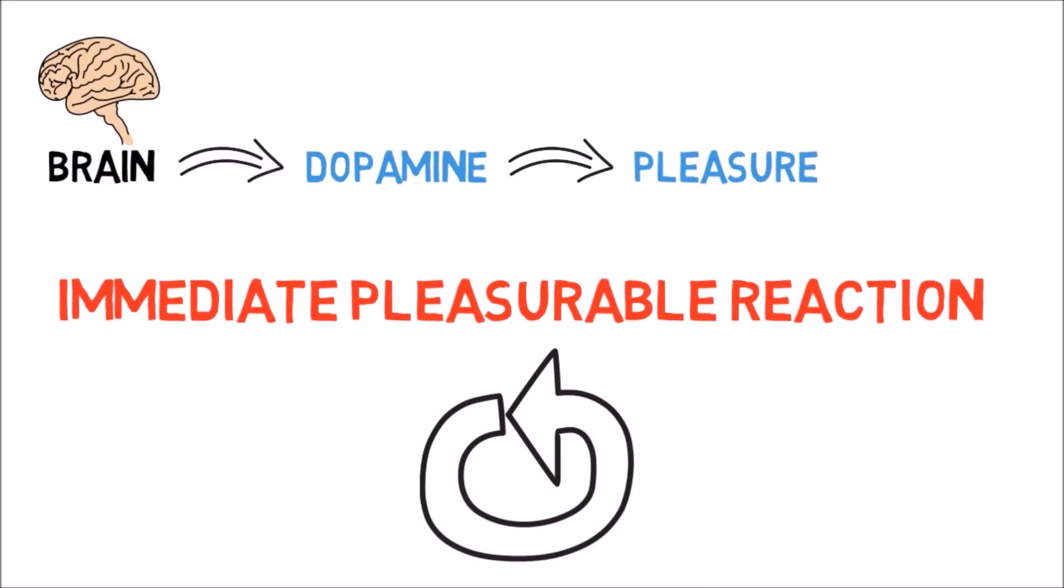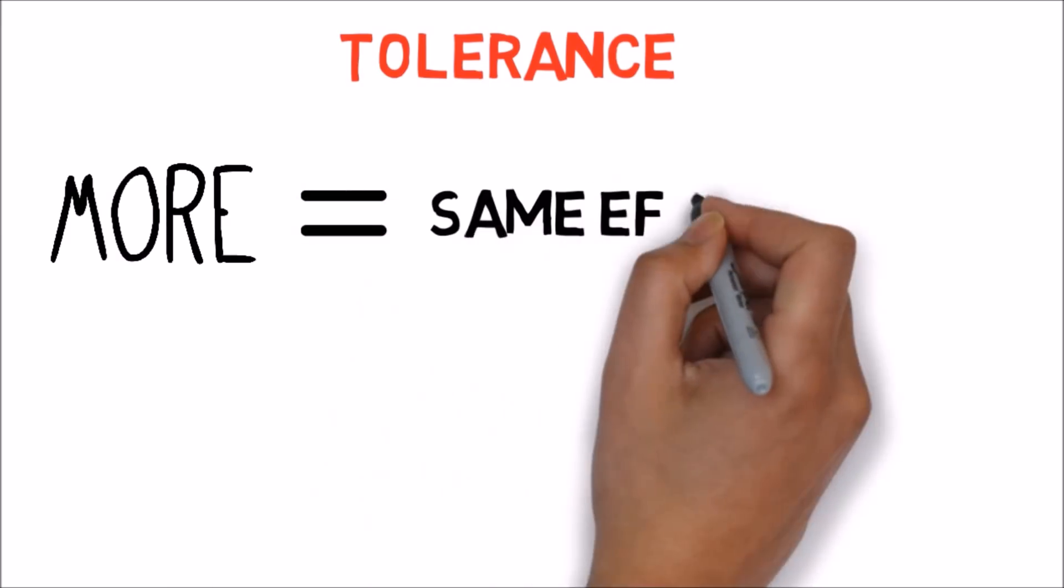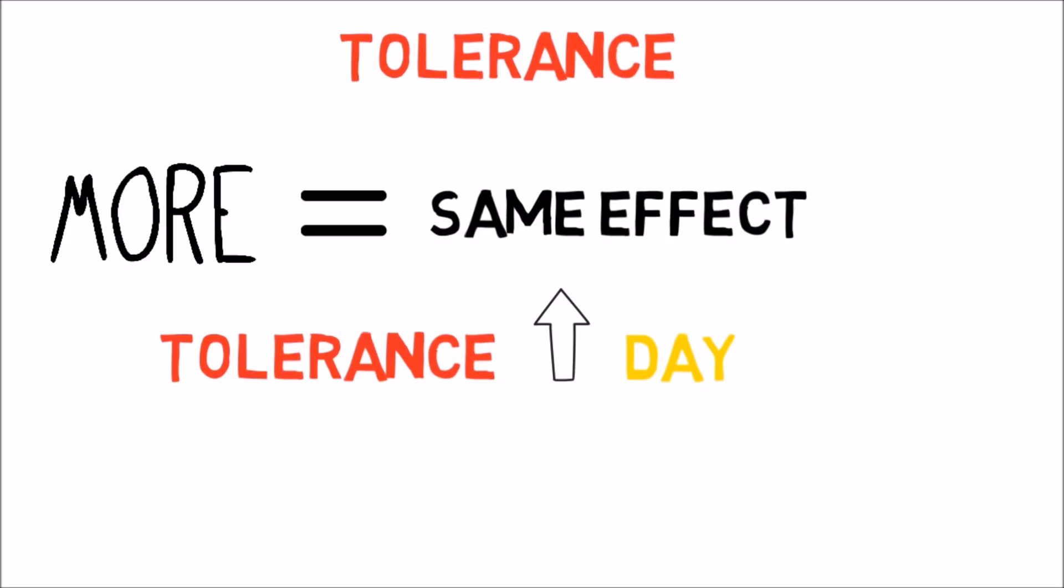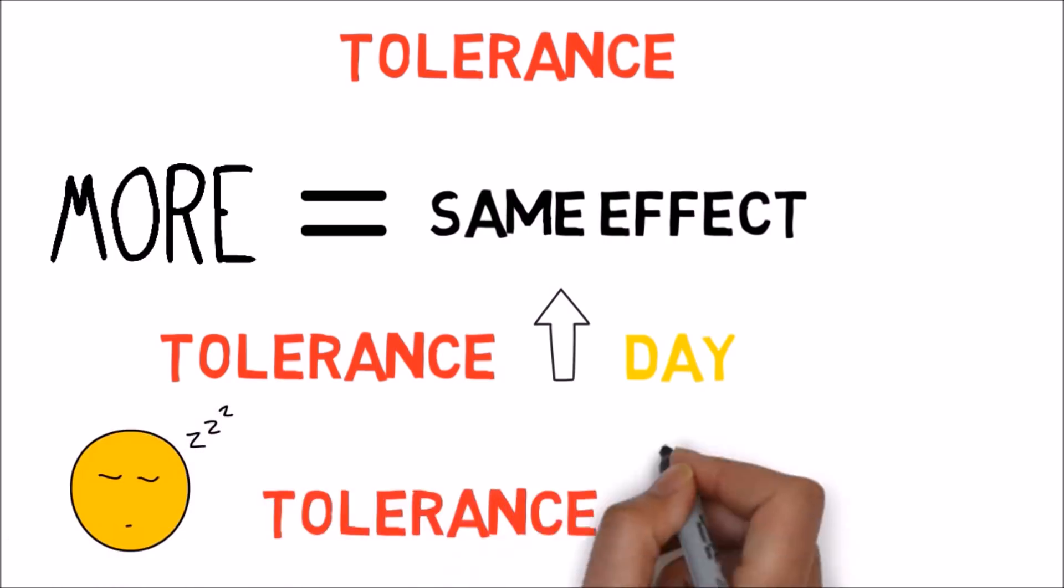Nicotine hits the brain and causes pleasure quite quickly, and its effects wear off just as rapidly. As with many drugs, the body builds up a tolerance to nicotine. Smokers start to need more nicotine to get the same effect. Nicotine tolerance builds up quickly over the course of the day, during continuous smoking. However, long stretches without a cigarette, like while sleeping, bring the tolerance back down.